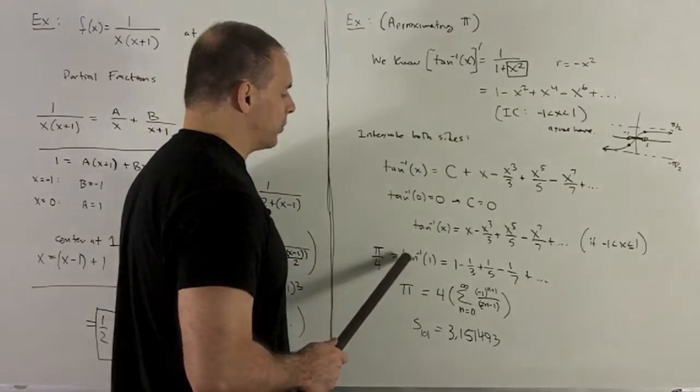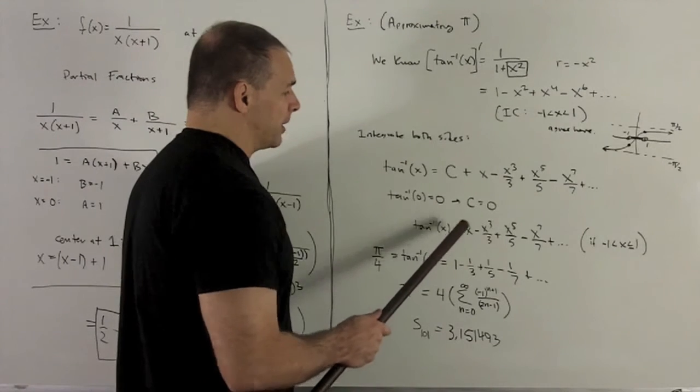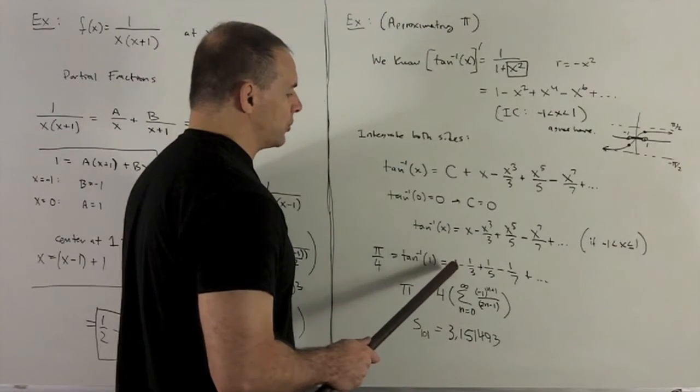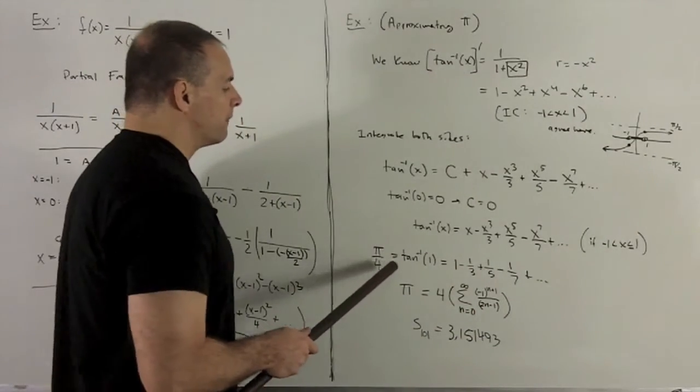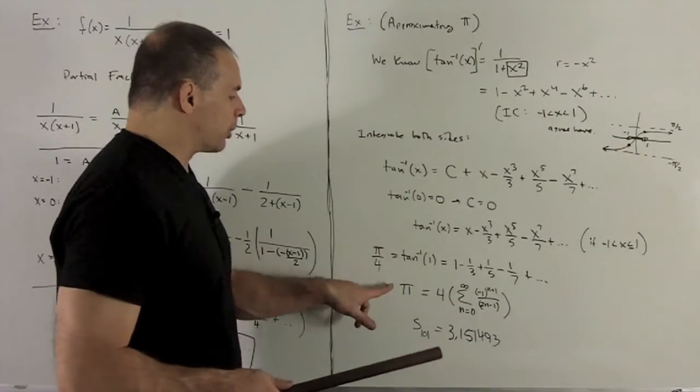So pi over four is going to be equal to tan inverse of one. I put this in the series, and we see that that's going to be equal to one minus a third plus a fifth minus a seventh, and so on. So if I move the four to the other side, I've got an expression for pi.